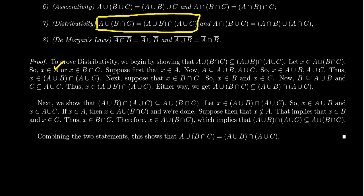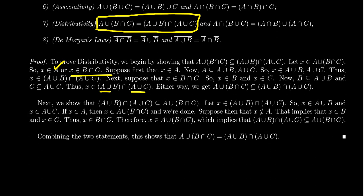Case 2: X belongs to B intersect C. Since intersection means AND, X belongs to B and X belongs to C. Since X belongs to B, we can enlarge to A union B, so X belongs to A union B. Since X belongs to C, we can enlarge to A union C, so X belongs to A union C. Since X is in both A union B and A union C, X belongs to the intersection of A union B and A union C. In either case, X belongs to this set, showing that the original set is contained inside the larger set.